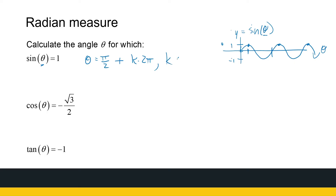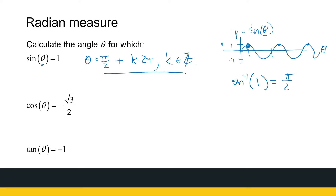So θ = π/2 + k·2π, where k can be any integer — positive or negative whole numbers. If you wanted to use a calculator, type second function sine of 1 and it'll give you π/2 — just one of the answers. You must generate the rest of them.